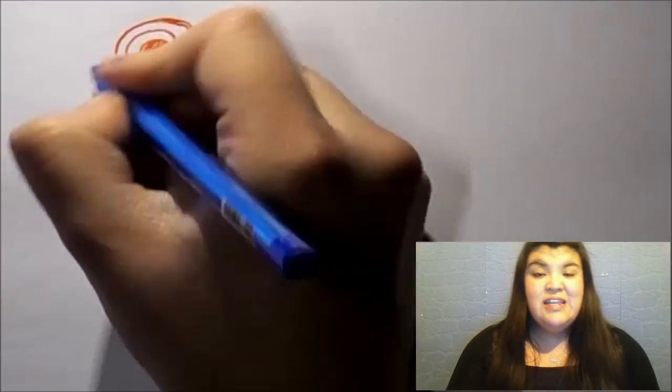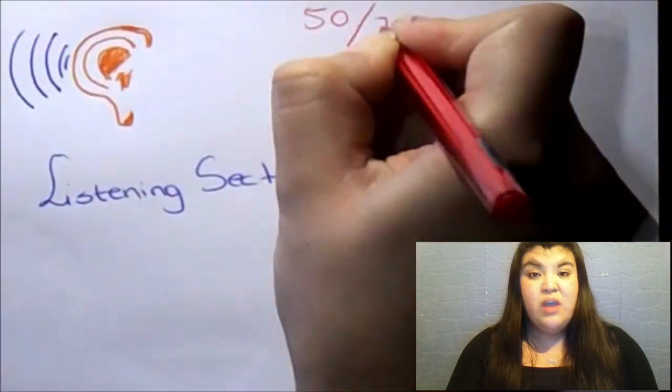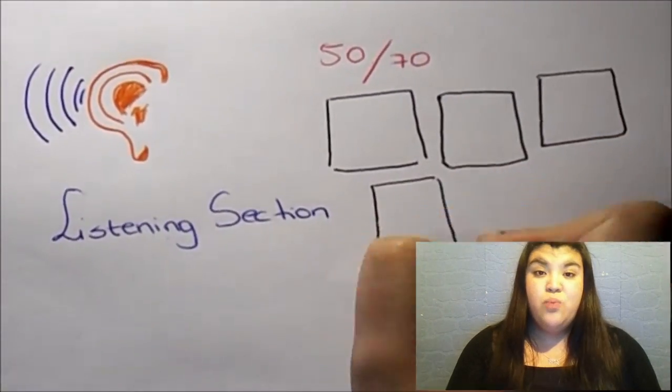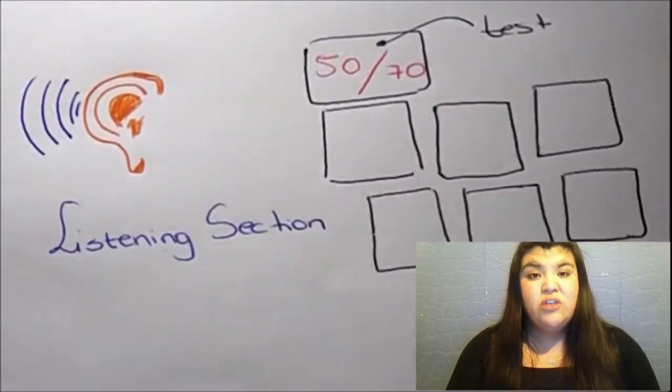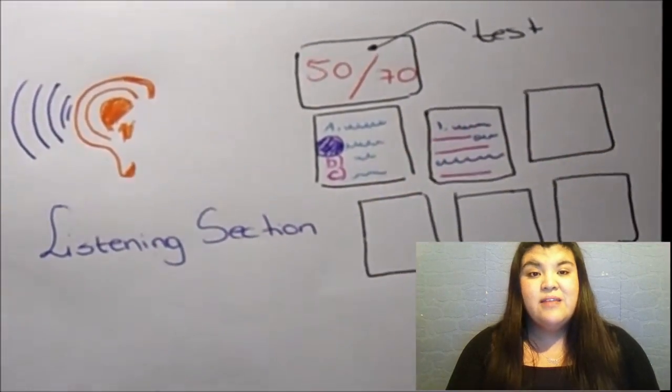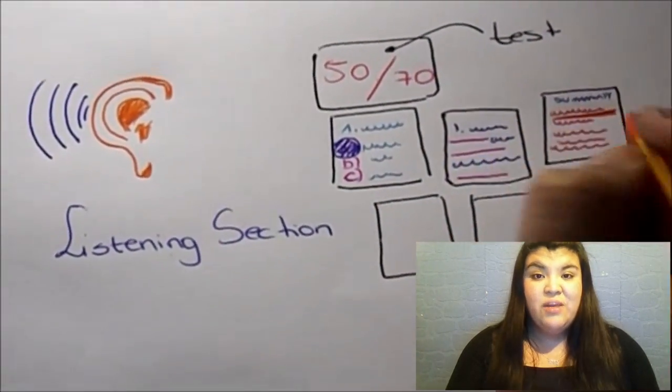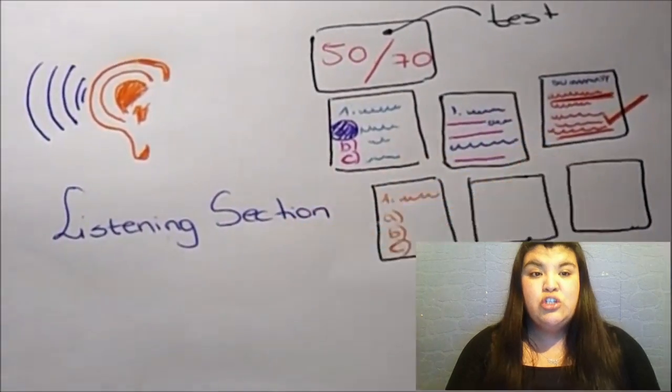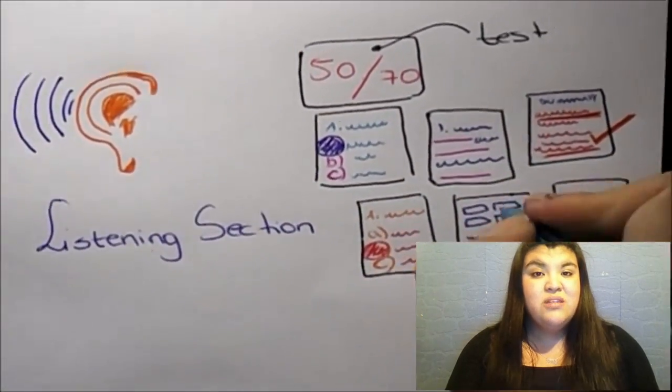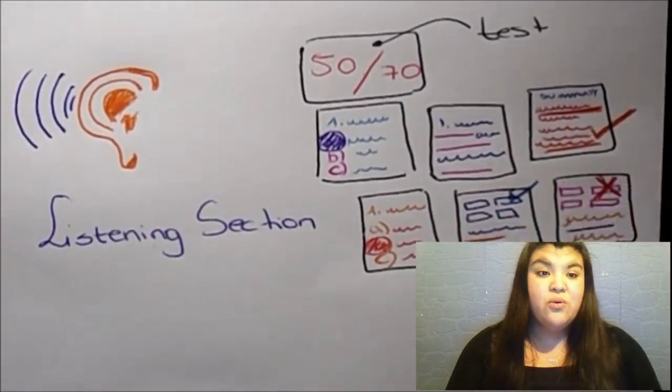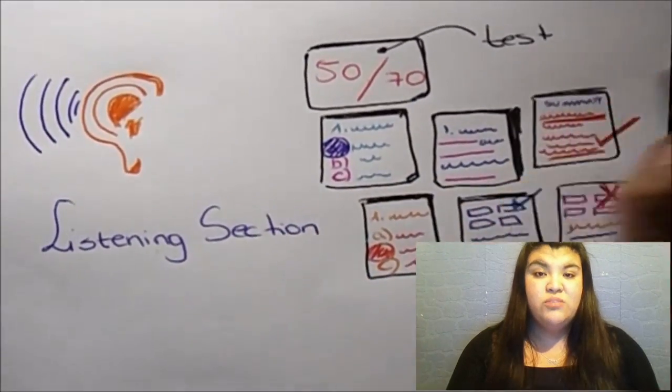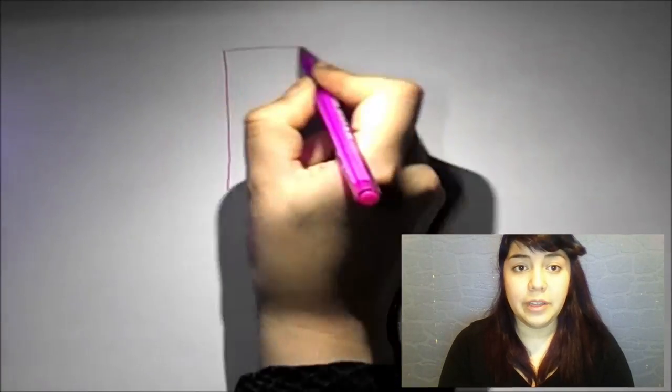Finally, the listening section is divided into eight parts: summarize spoken test, multiple choice choose multiple answers, fill in the blanks, highlight correct summary, multiple choice choose single answer, select missing words, highlight incorrect words, and write from dictation.